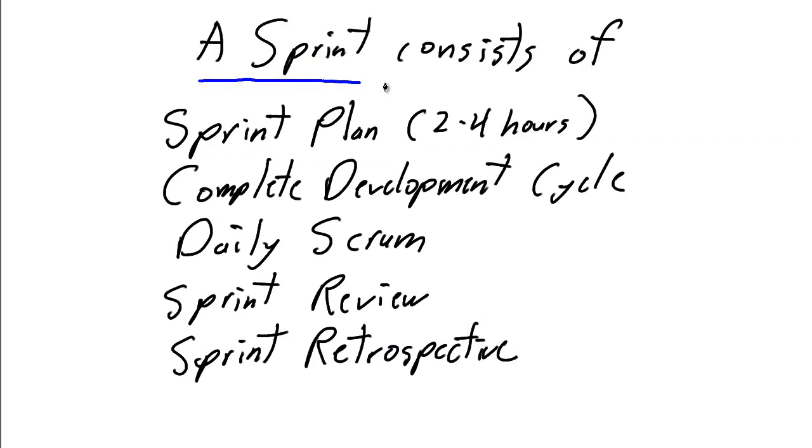And in order to help us ensure that we get all of the stories completed in a Sprint, and only the five stories completed in the Sprint, there are some rituals, there are some processes that Scrum defines that we need to follow in each Sprint.